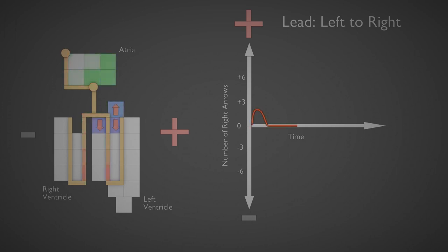Our atrial depolarization is the same, and then nothing. All of our energy was moving up and down in this model, and the small bit of left-to-right movement we have both cancel out to zero.